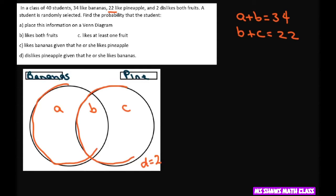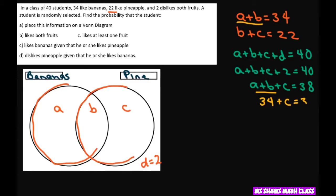So we know that A plus B plus C plus D equals 40. So therefore we know that A plus B plus C plus 2 equals 40. Therefore A plus B plus C equals 38. We also know that A plus B is 34. So 34 plus C equals 38. So C is 4.